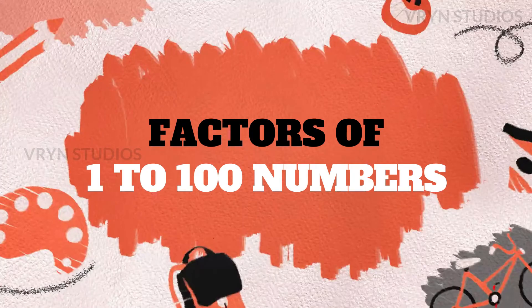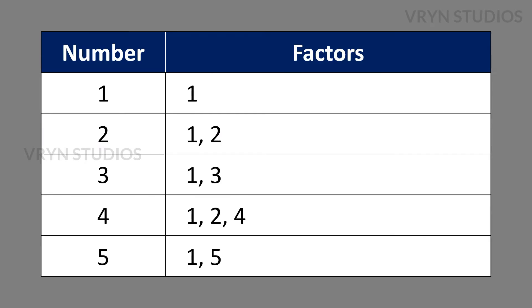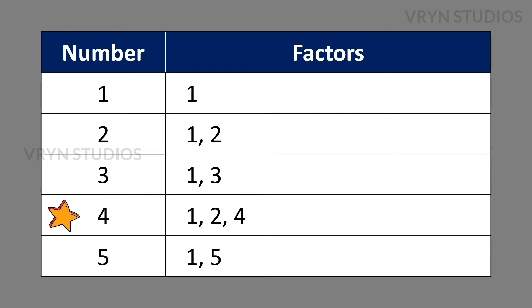Factors of 1 to 100 Numbers. The factors for the number 1 is 1. The factors for the number 2 is 1 and 2. The factors for the number 3 is 1 and 3. The factors for the number 4 is 1, 2 and 4. The factors for the number 5 is 1 and 5.